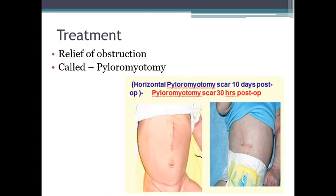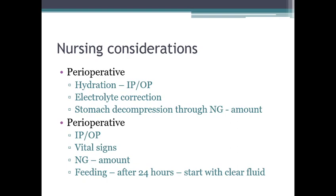The treatment for pyloric stenosis is relief of obstruction via pyloromyotomy, a surgical intervention. Nursing considerations include pre-operative and peri-operative care: keep the child hydrated, correct electrolytes, perform stomach decompression through an NG tube, and monitor vital signs. Post-operatively, start feeding after 24 hours beginning with clear fluids.